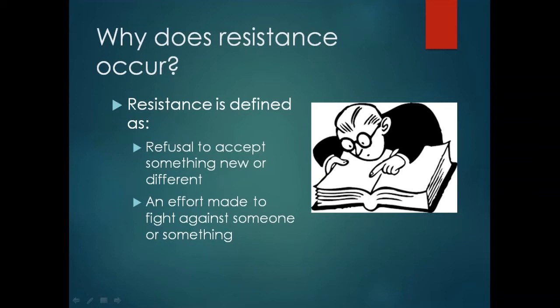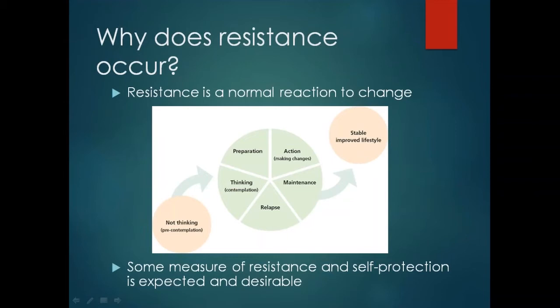In order to understand why resistance occurs, it can be helpful to start back at square one. According to the Merriam-Webster dictionary, resistance is defined as a refusal to accept something new or different, an effort made to fight against someone or something. Our job as therapists is to consider what might they be possibly fighting against. It's important first to acknowledge that resistance is a normal reaction to change. Change is hard and takes work. According to Prochaska and DiClemente's trans-theoretical model of behavior change, it's a process involving thinking, preparation, action steps, and then maintaining that behavior. Resistance can occur at any point in this process, and skillful handling of resistance is important throughout the course of therapy.